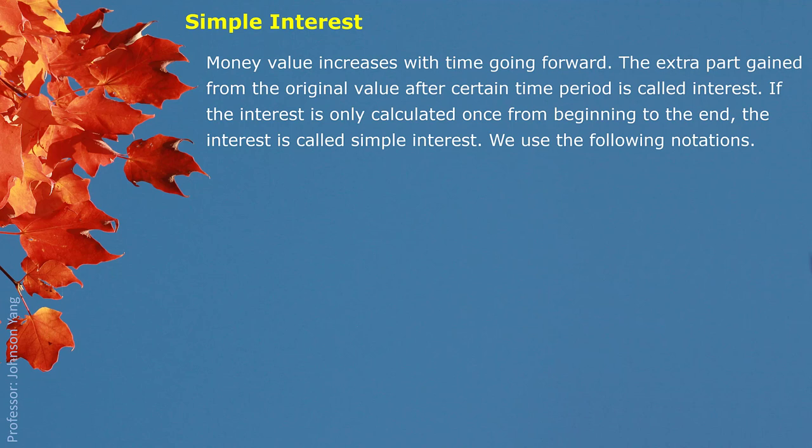We use the following notations. The capital I represents interest. Lowercase r represents annual interest rate. Capital P represents principal or present value. Lowercase t represents the length of the time period.